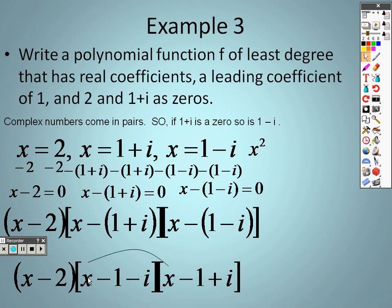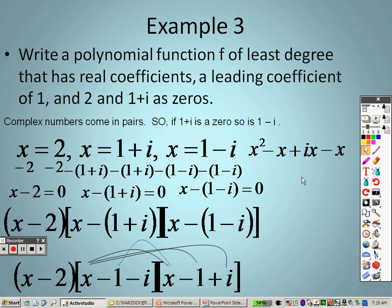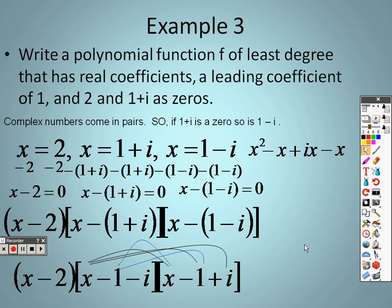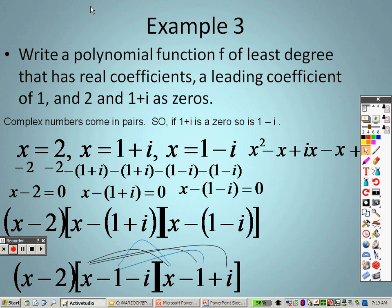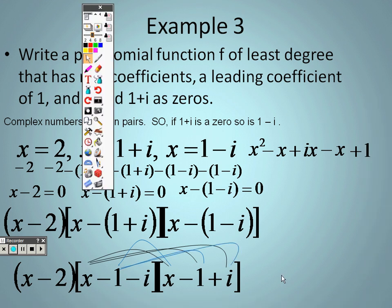So when I distribute, I'm going to start with these two because they're the crazier of the two. x times x is x². x times -1 is -x. x times i is positive ix. Then we move on to -1. -1 times x is -x. We have -1 times -1, which is positive 1.